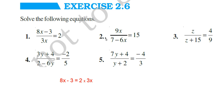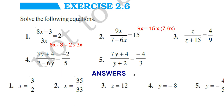Here also, in question number 2: 9x / (7 − 6x) = 50. Here also you can write 9x = 15 × (7 − 6x). Remove the bracket and find out the answer. Third, fourth, and fifth we already discussed, so do yourself. Here are the answers — do check yourself.